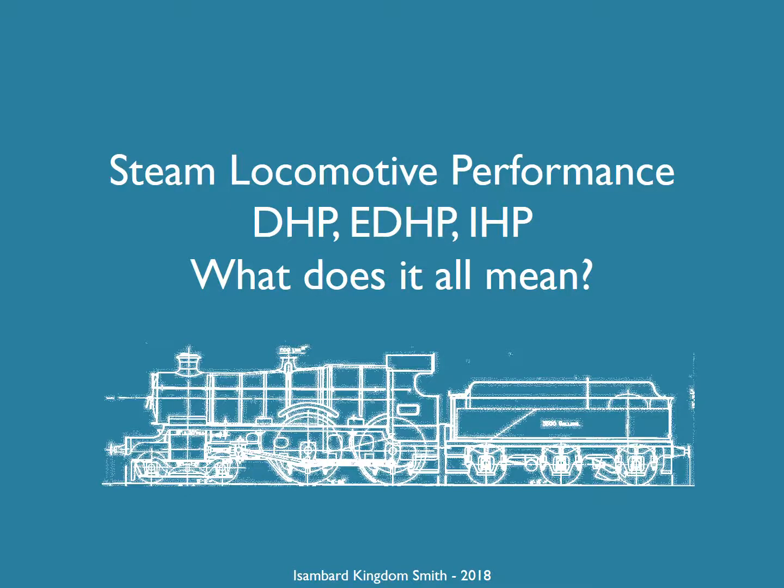If you read books on steam locomotive performance you'll hear people going on about drawbar horsepower, equivalent drawbar horsepower and indicated horsepower. So what does all that mean?